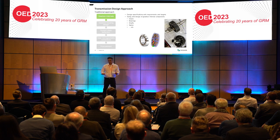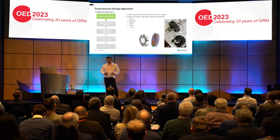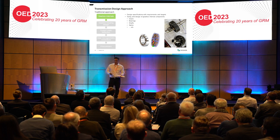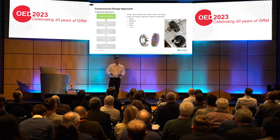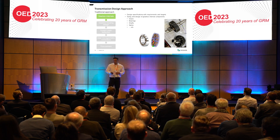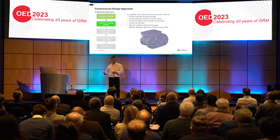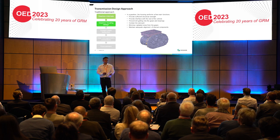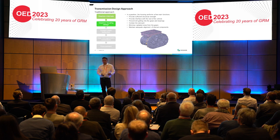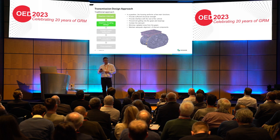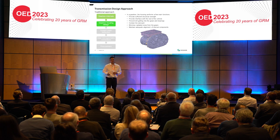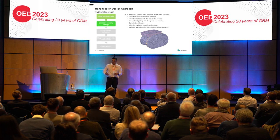Moving to a very basic, generic and simplified transmission design approach: when you start the design, you take the design specification and requirements and begin to size internal components — gears, bearings, shafts, splines. Once sized, you design the gearbox housing, which has several functions: providing sufficient structural strength, providing interface to the vehicle chassis via mounts, preventing dirt ingress that could compromise bearing and gear life, and containing the lubricant since gears and bearings need lubrication.